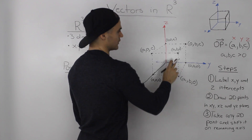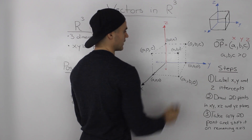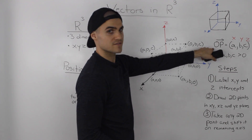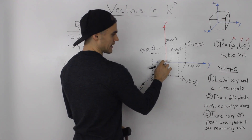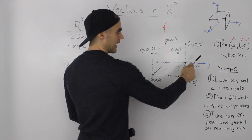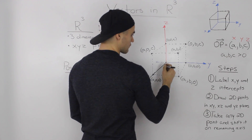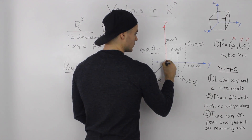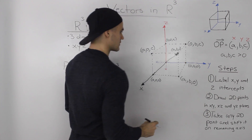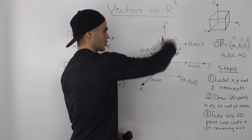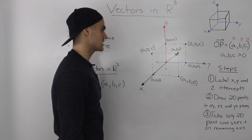We've taken care of all the coordinates — the x, y, and z coordinates. This is our final point, and we have to draw this vector OP. The tail of the vector starts at the origin, and the head ends at coordinate (a, b, c), which we have right here. So the vector looks something like this — it goes across and through the cube if you try to visualize it in a 3D way.